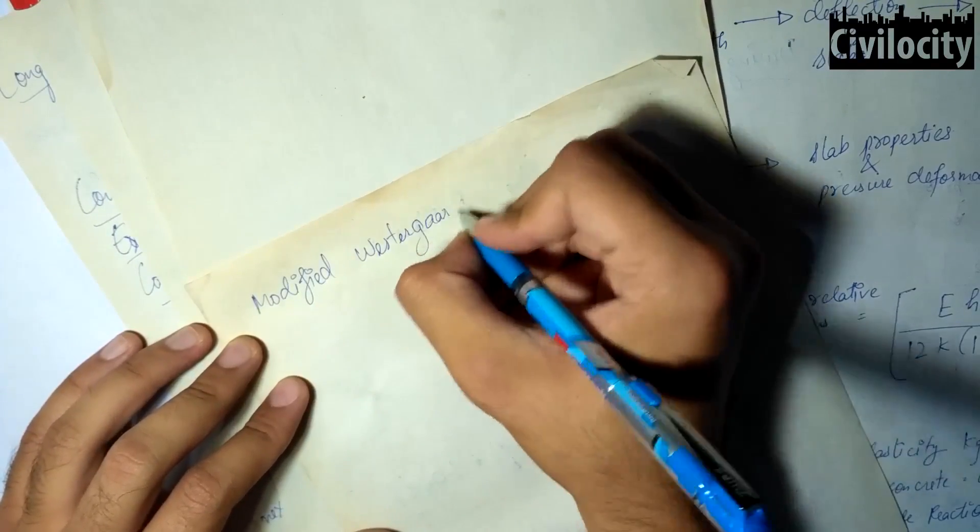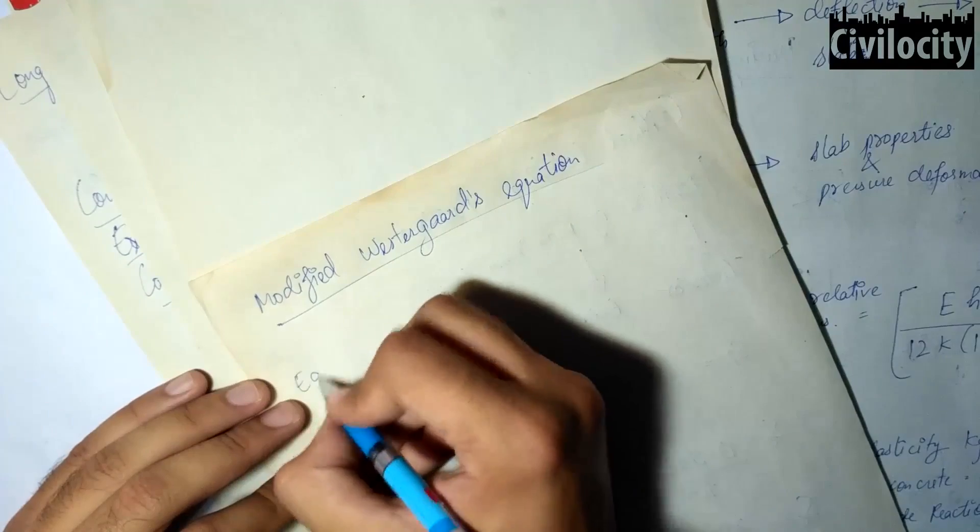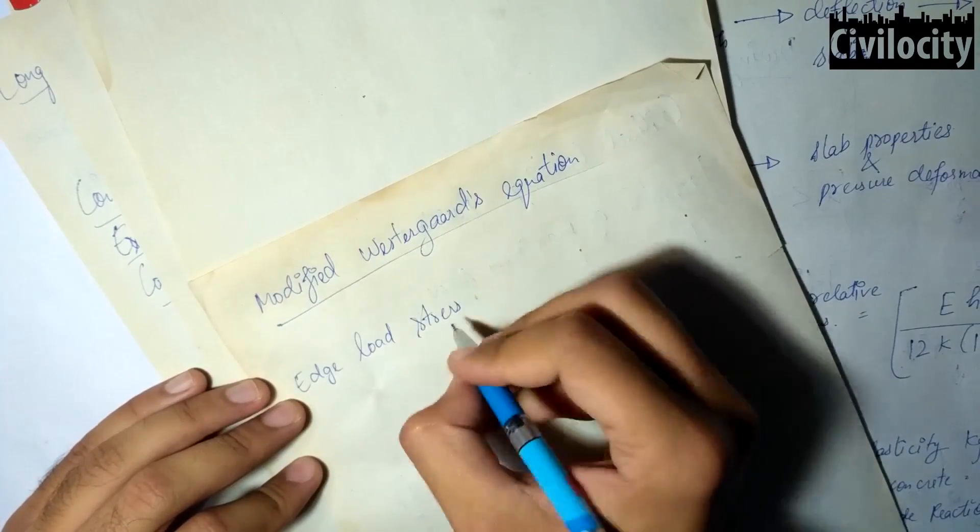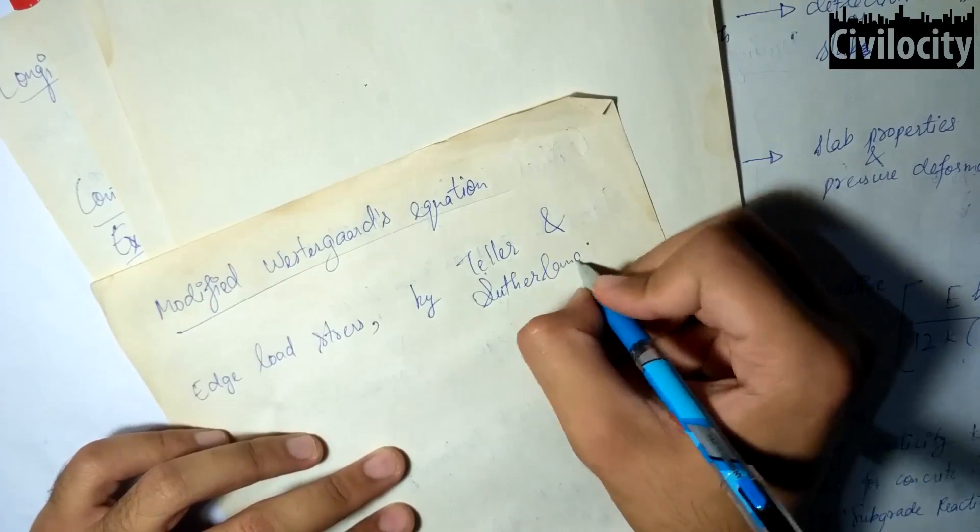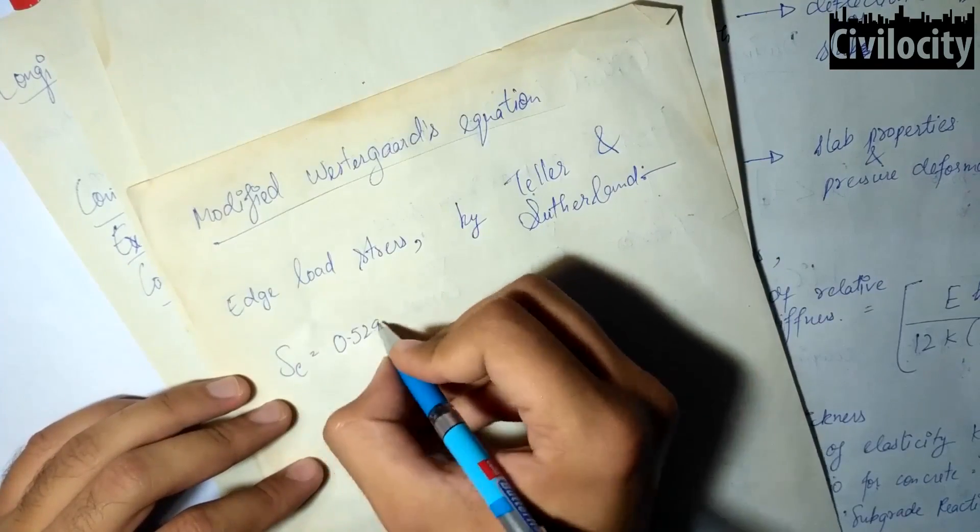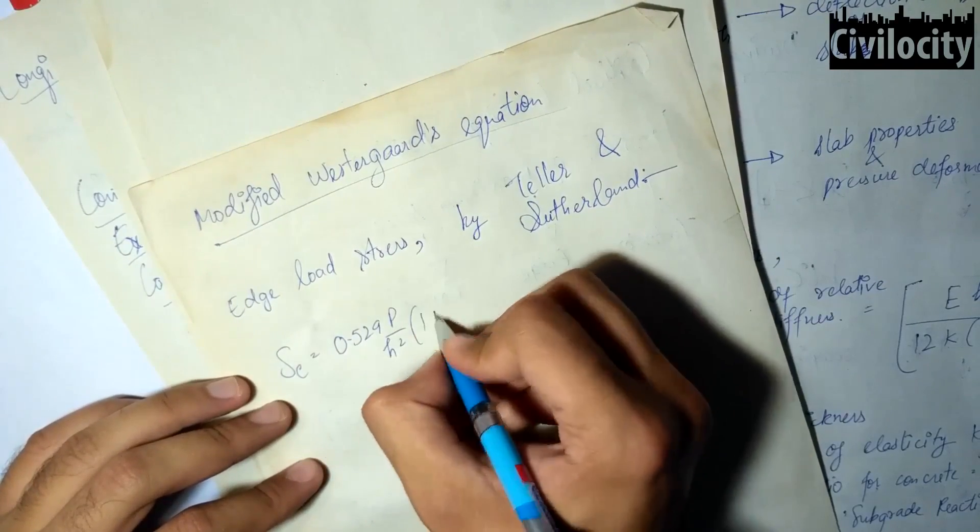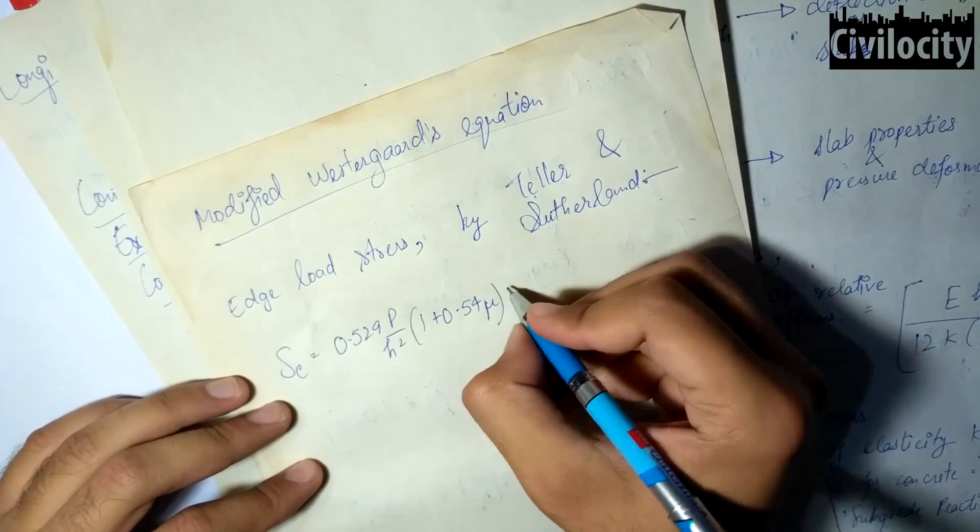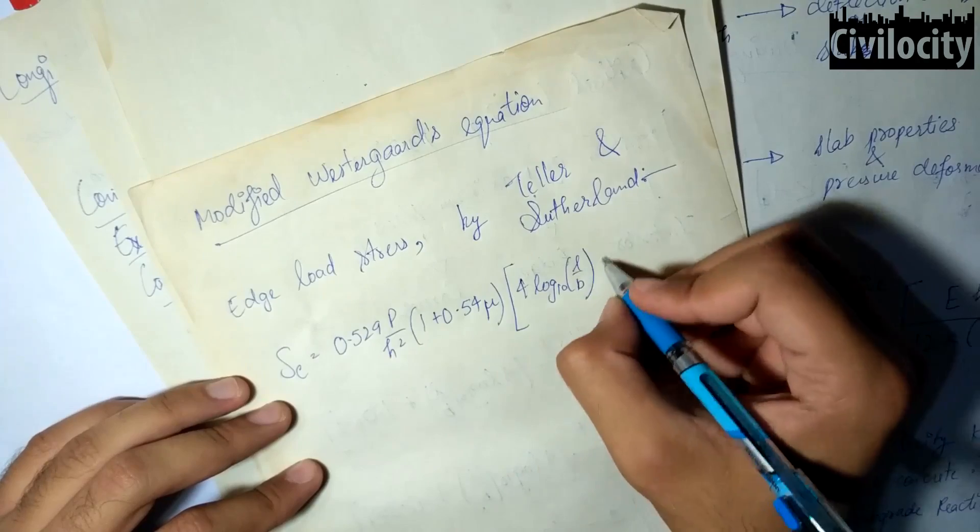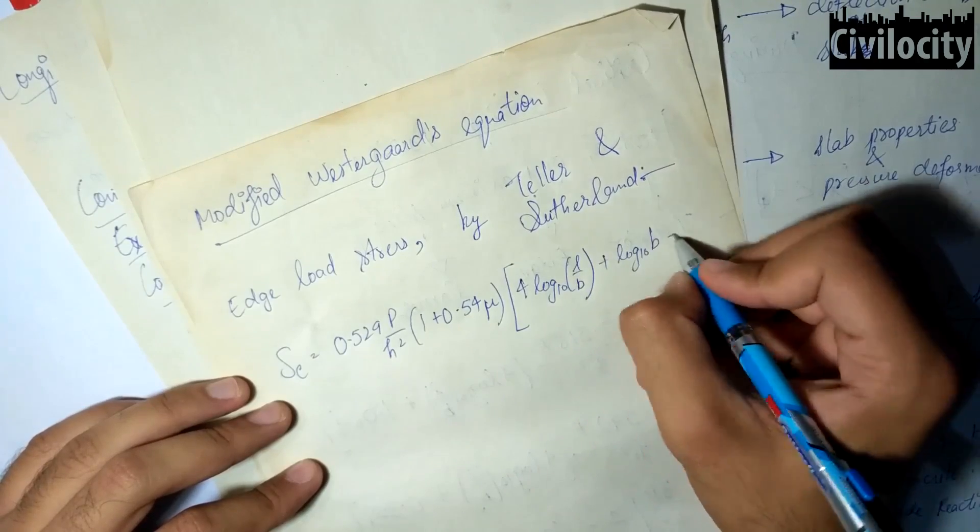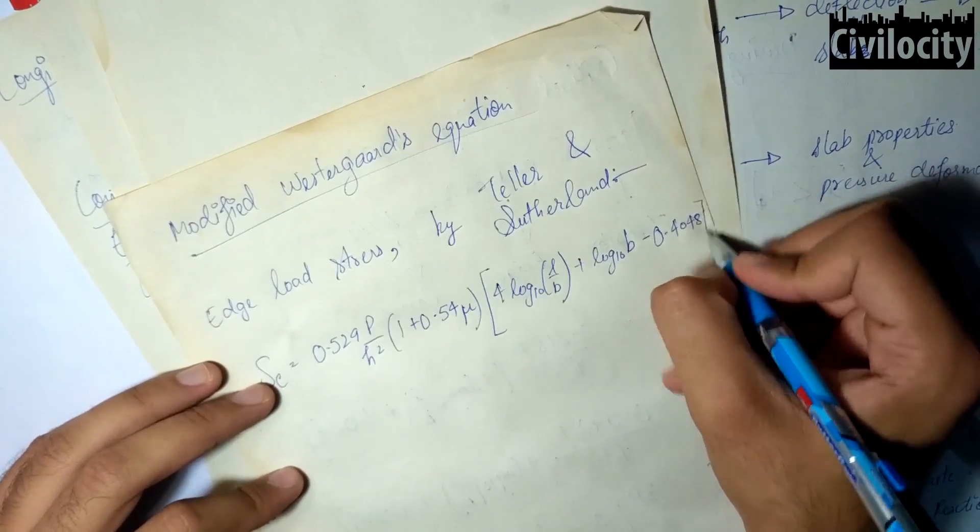After Westergaard gave his equations, his equation of edge load stress was modified by Teller and Sutherland, which is given as Se equals 0.529p by h squared times 1 plus 0.54 nu times 4 log 10 L by B plus log 10 B minus 0.4048.